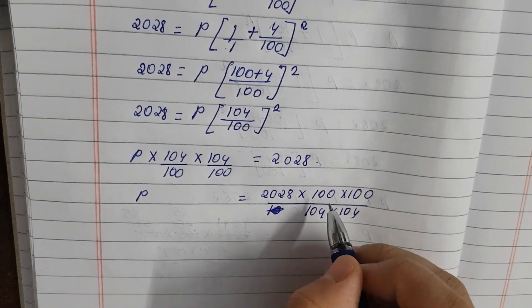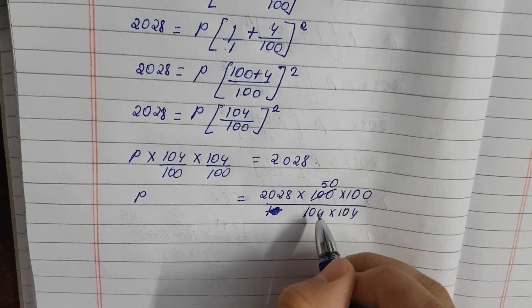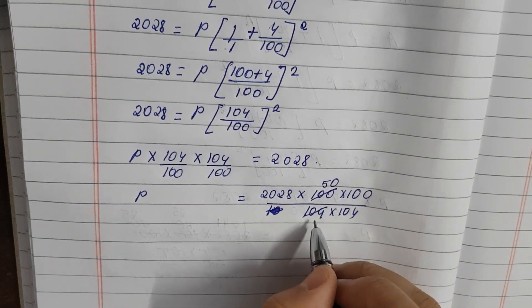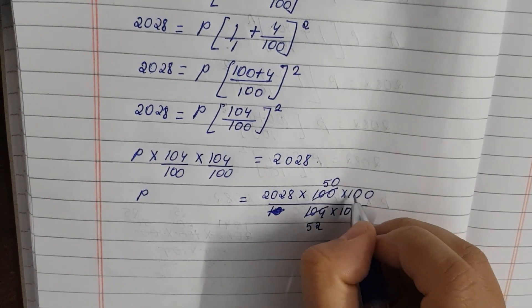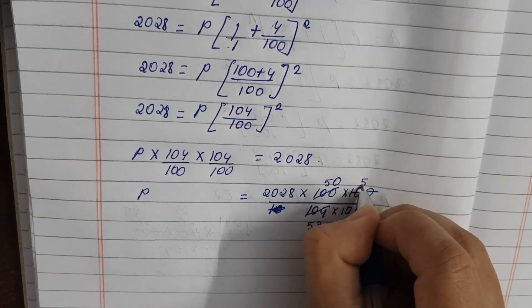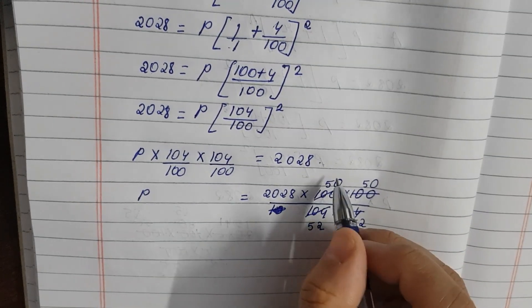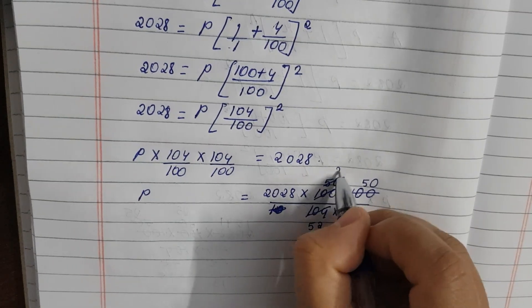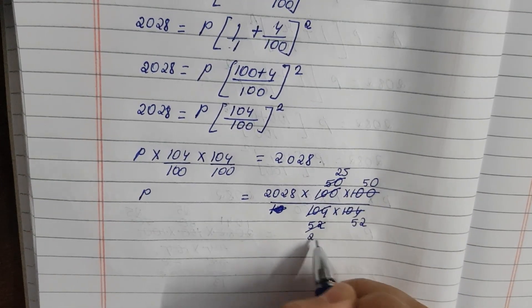So 100, 2 times divides, 50 times. 104, 2 times divides, 52. So cancel from the start. 50, 2 times divides, 25. 52, 2 times divides, 26.